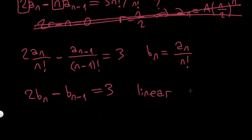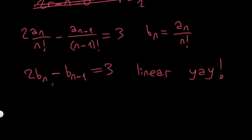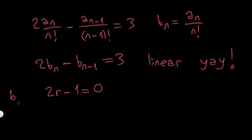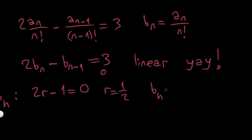Linear — we can solve it! Now we just use the same method: characteristic polynomials. I will have 2r minus 1 equals 0. First I'm solving the homogeneous solution, pretending the right-hand side is 0. So 2r minus 1 gives r equals 1/2, and my homogeneous solution b_n^h is going to be equal to a times (1/2)^n.